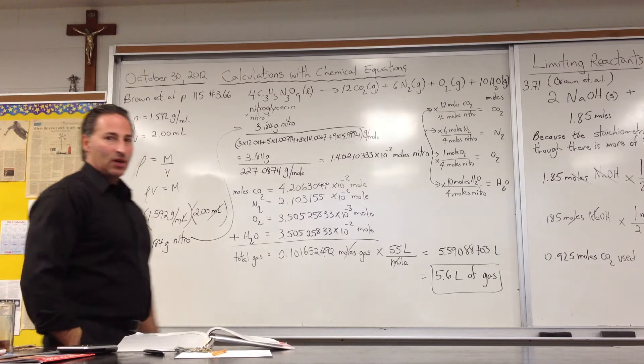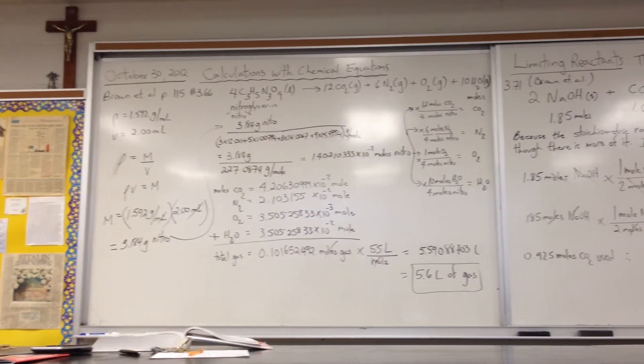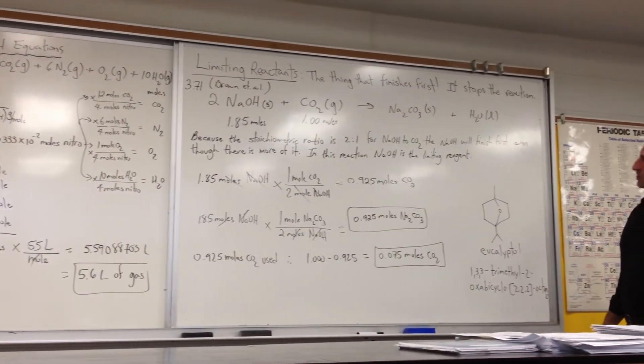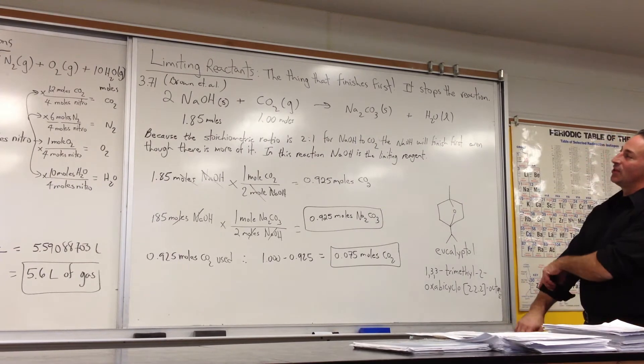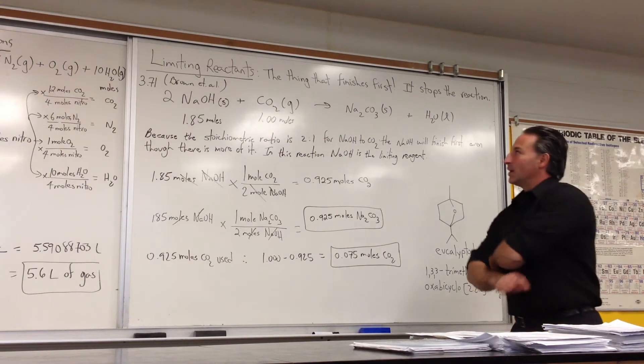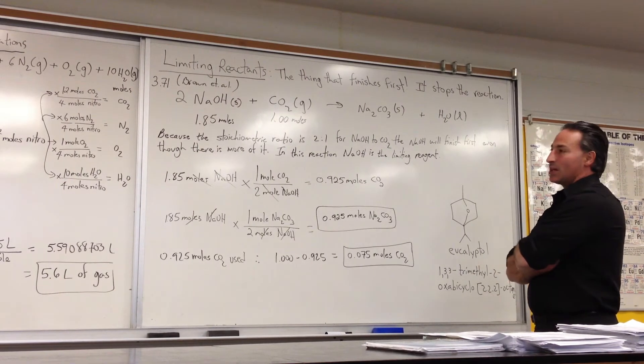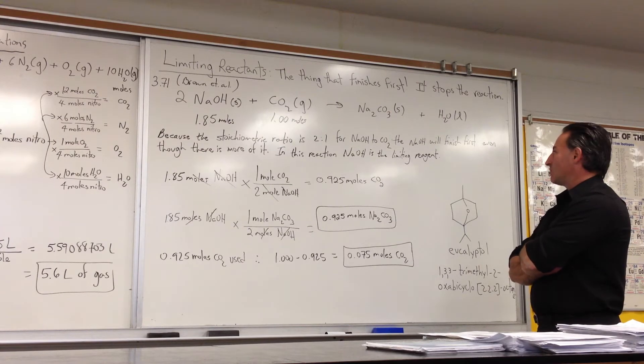In the second question, moving on to the second board, we have limiting reactants. The thing that finishes first is the limiting reactant. They have a fancy definition in the book, but really it's, what it boils down to is, if you have a recipe, and one of the ingredients runs out, that's what's going to limit how many things you can make.